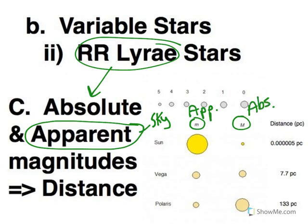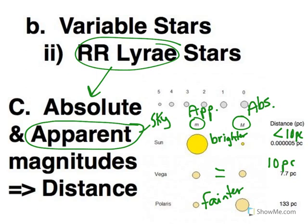If apparent is brighter than absolute, then it's closer than 10 parsecs. If apparent and absolute are equal, it's at 10 parsecs. And if the apparent is fainter than absolute, then it is farther than 10 parsecs. So RR Lyra stars make things very, very easy for measuring distances to stars.